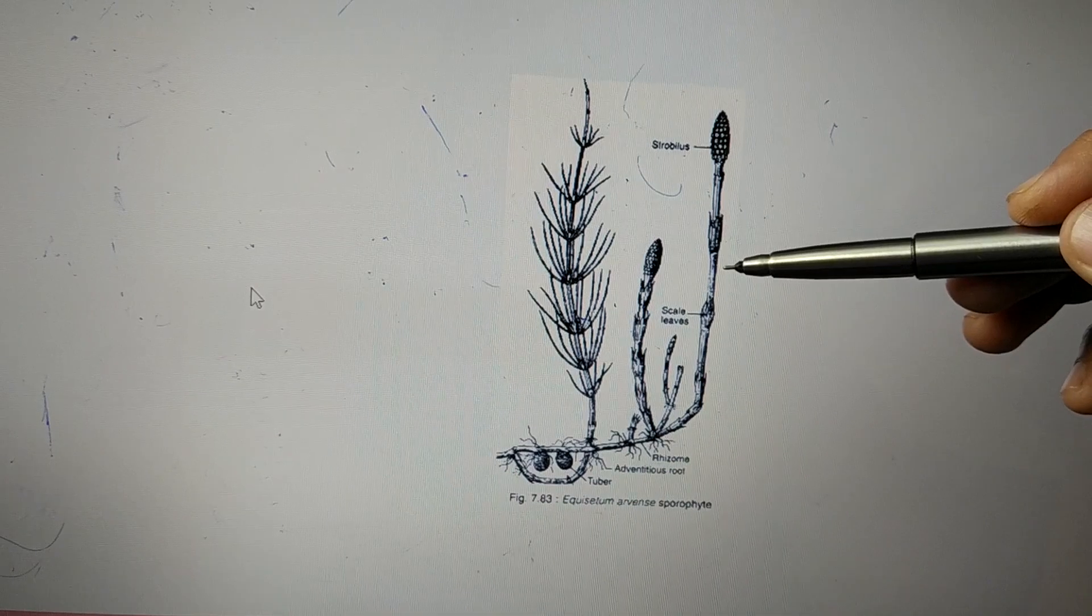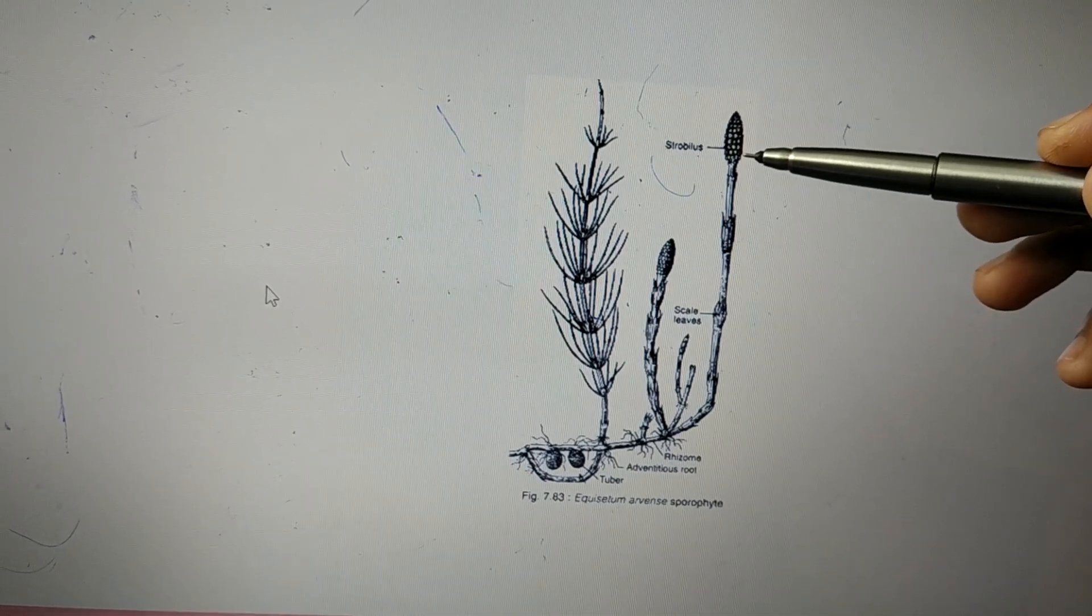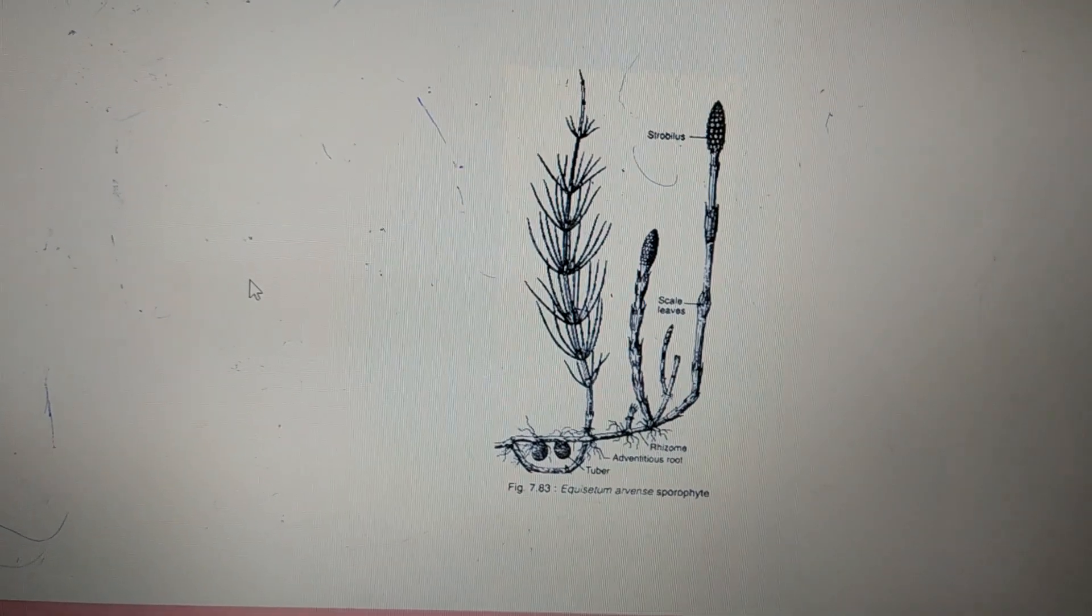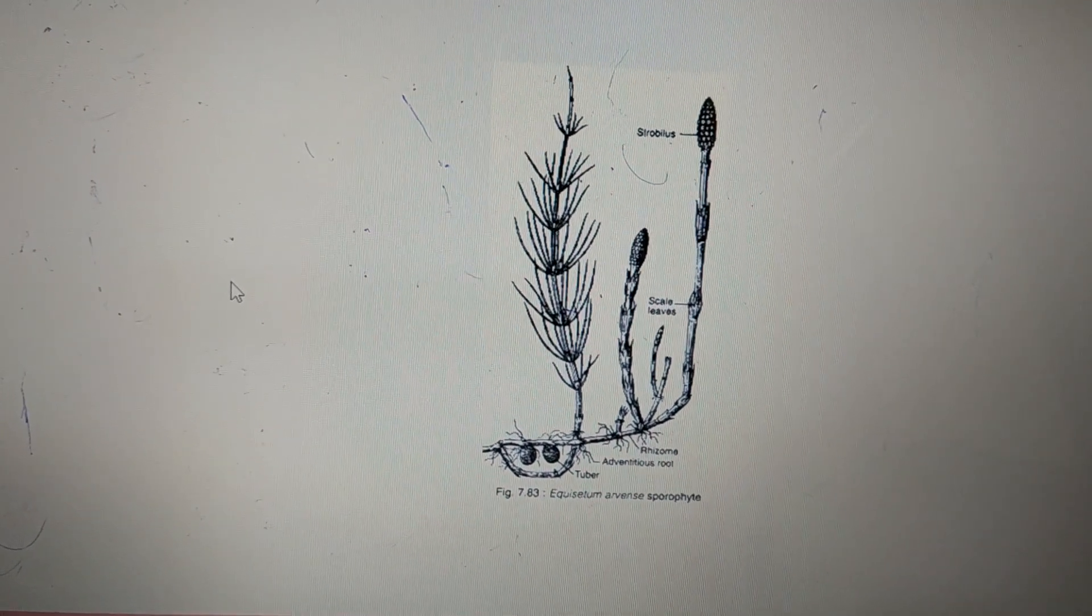Apart from that, they have a strobilus at the tip. This was an external feature of Equisetum. Thank you.